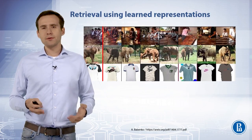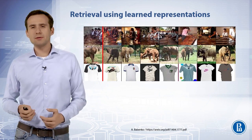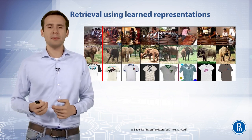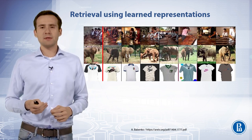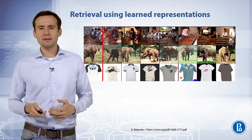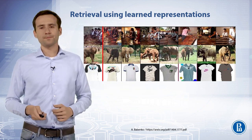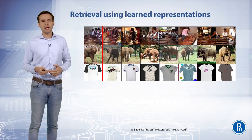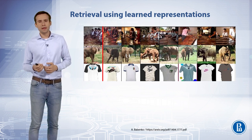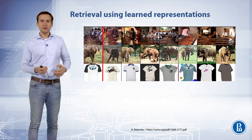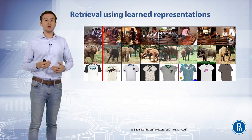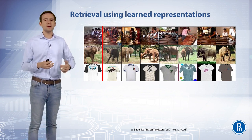Intermediate image representations learned by deep convolutional neural networks may be used to solve a variety of tasks in computer vision. One of the most straightforward applications is retrieval of similar images. Consider the feature activations induced by an image at the last 4096-dimensional hidden layer. If two images produce feature activation vectors with a small Euclidean separation, we can say that the higher levels of the neural network consider them to be similar. The figure on the slide shows nine images from the ImageNet collection used as queries, with the most similar images retrieved according to this measure.